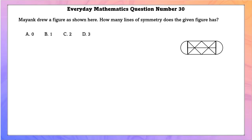Everyday Mathematics question number 30. Mayak drew a figure as described. The figure has only two lines of symmetry.